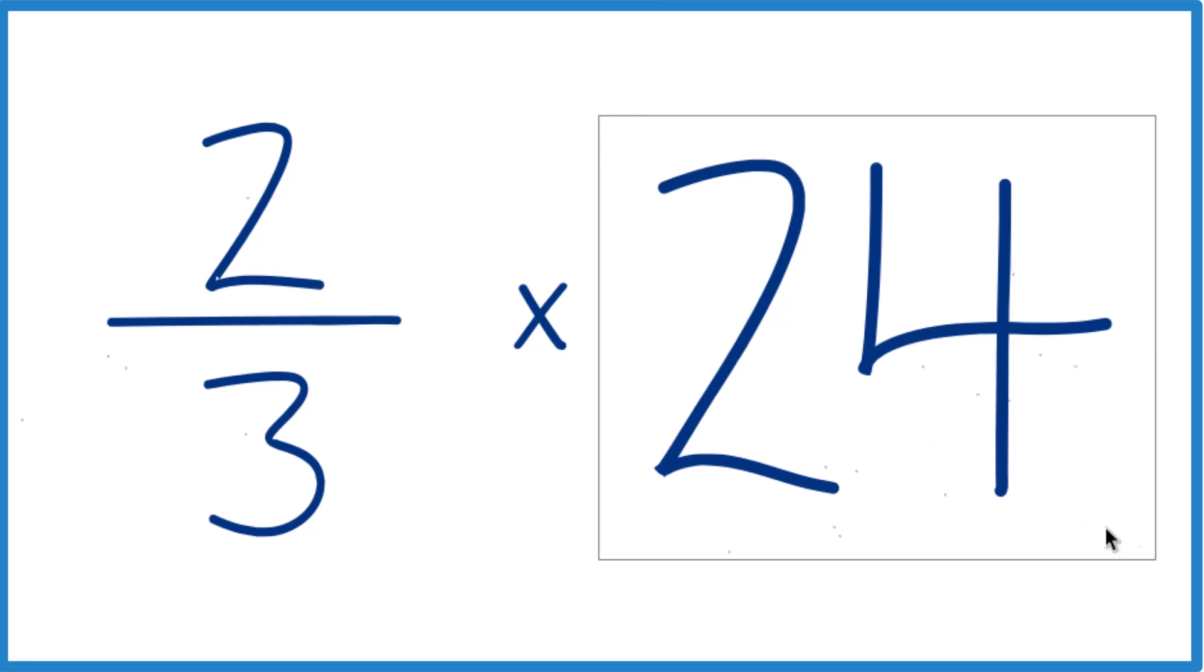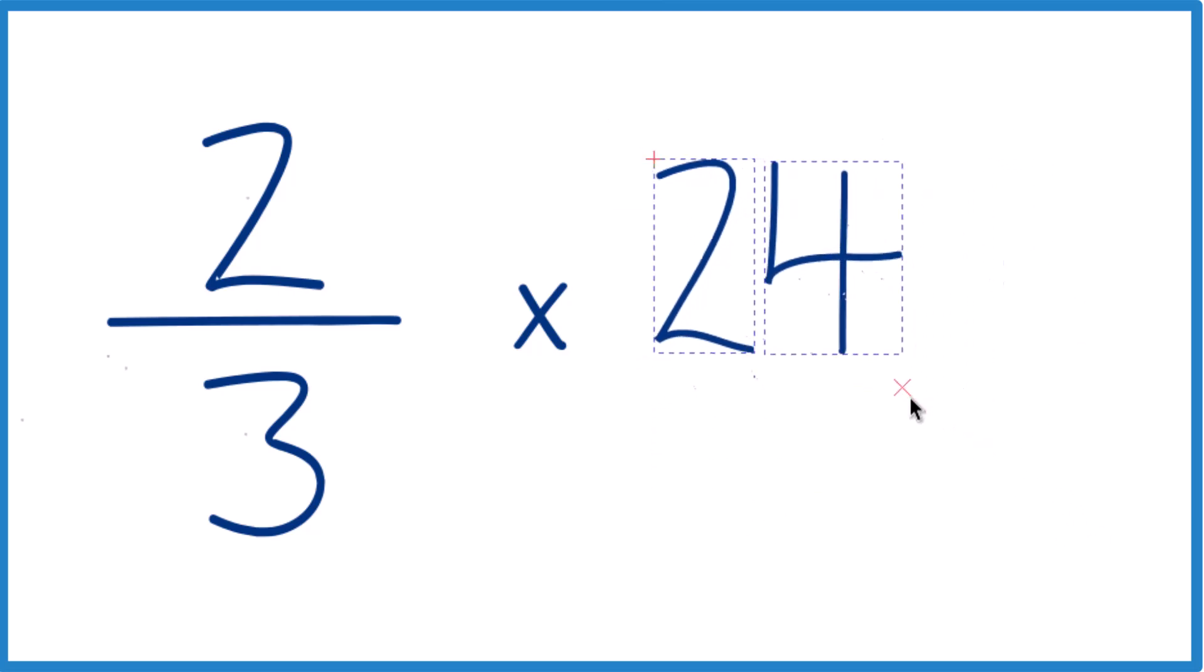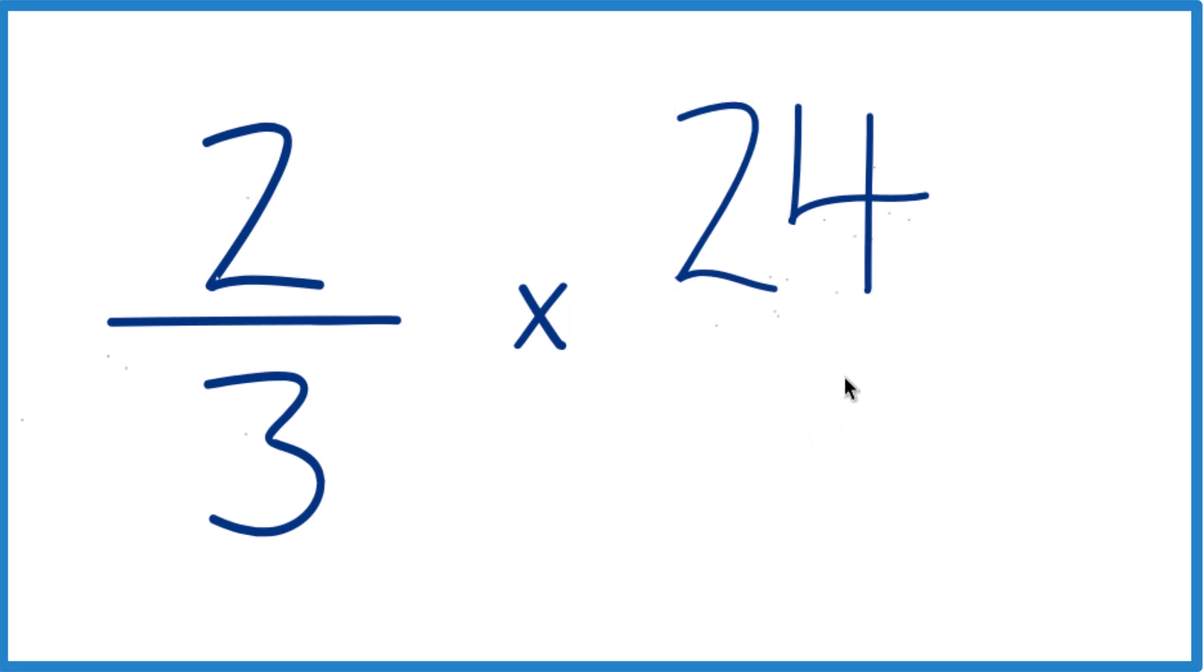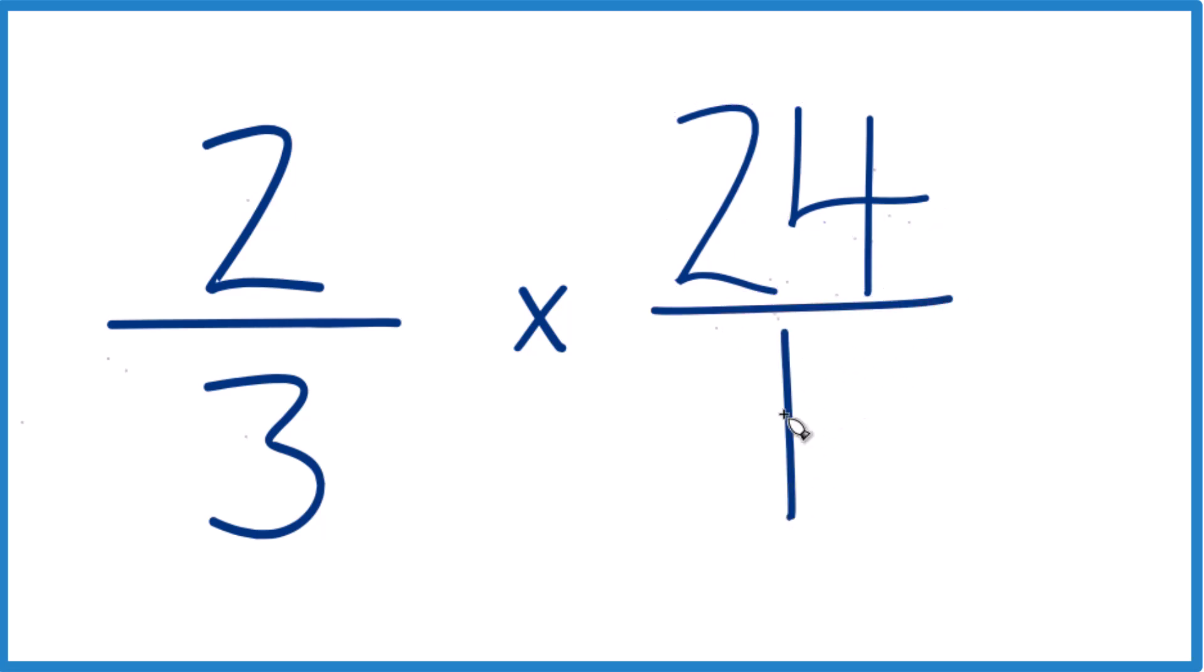Let's take that 24 here. Instead of 24, let's call that 24 over 1. It's still 24 because it's just 24 divided by 1. That's 24, but everything lines up nicely now.